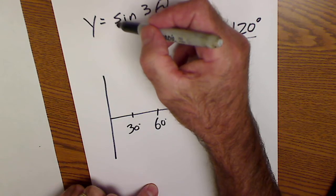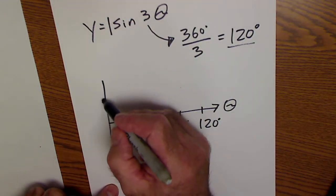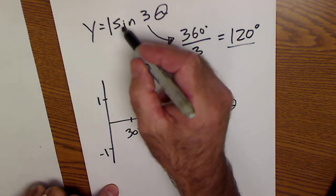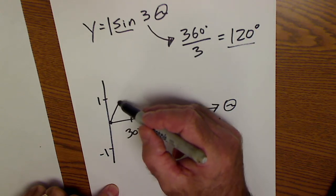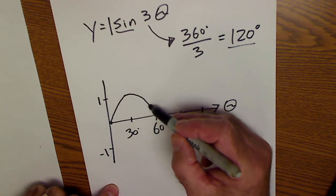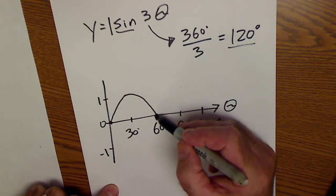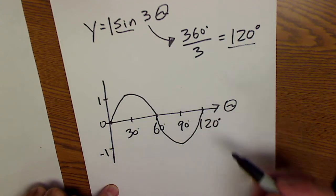There's no value in front of the sine, so that must be a 1. So it's going to go up to 1 down to negative 1. It's a sine graph, so it'll start at 0, 0, up to 1 at 30, down to 0 on the y-axis at 60, negative 1 at 90, back to 0 at 120.